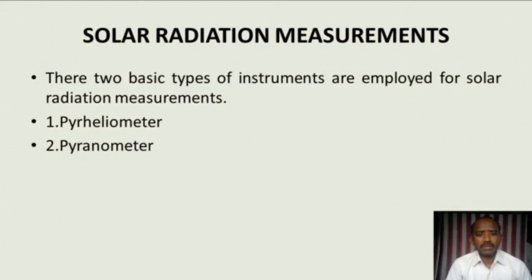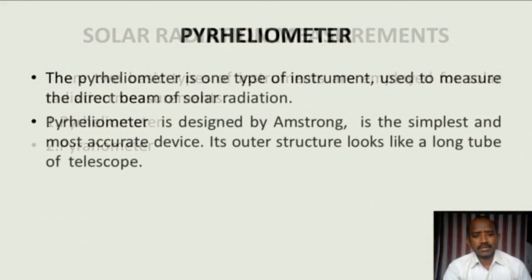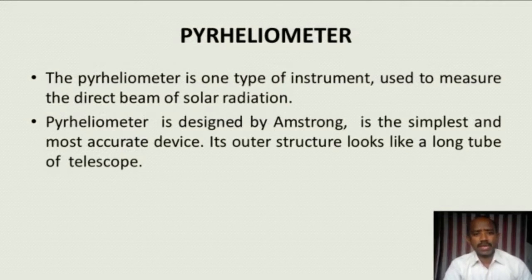There are two basic types of instruments to measure solar radiation. The first one is the pyrheliometer and the second one is the pyranometer. There is a little bit of difference between these two devices. First, in this session, we have to study about the pyrheliometer.